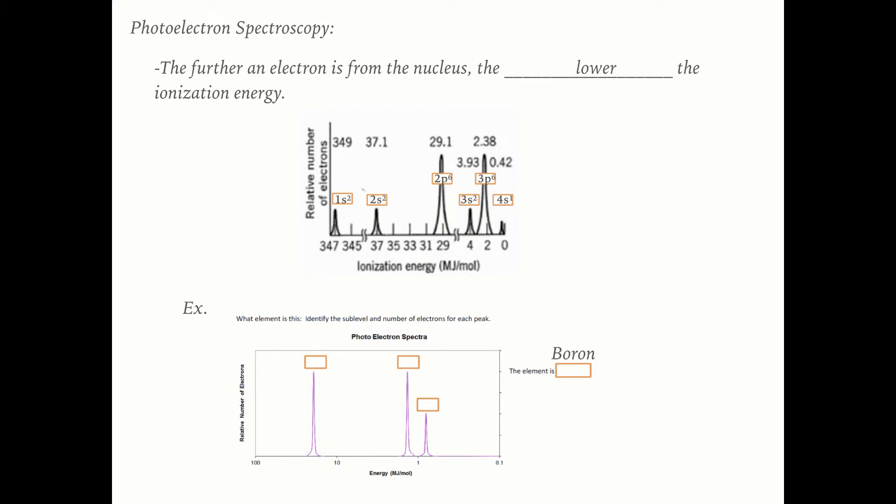Remember, as you move across the periodic table from left to right, in general ionization energy increases, and as you move from top to bottom, ionization energy decreases. So if you have an element which has a greater ionization energy overall, all of its peaks are going to be to the right of the original peak.